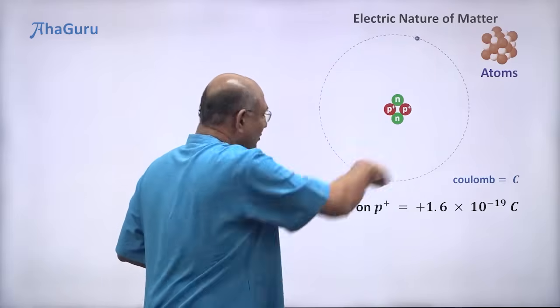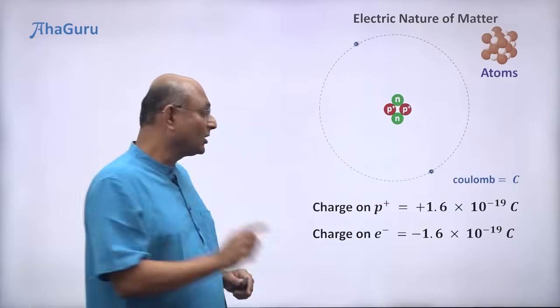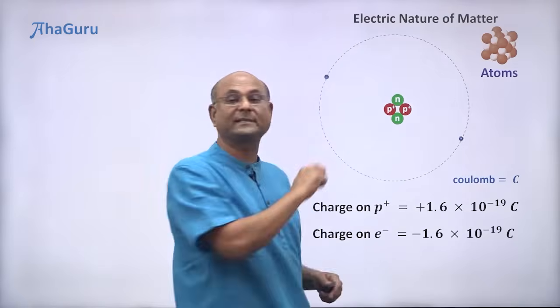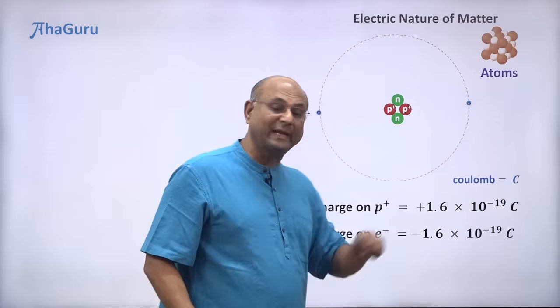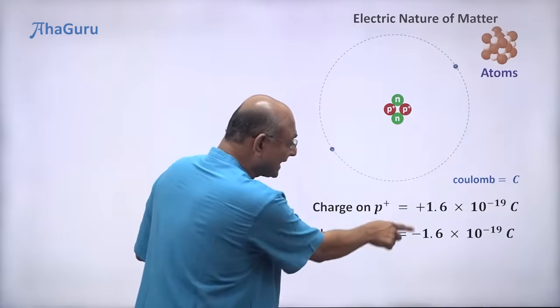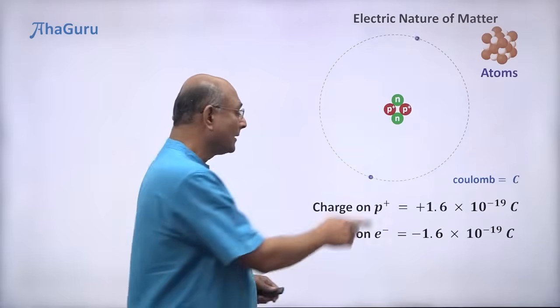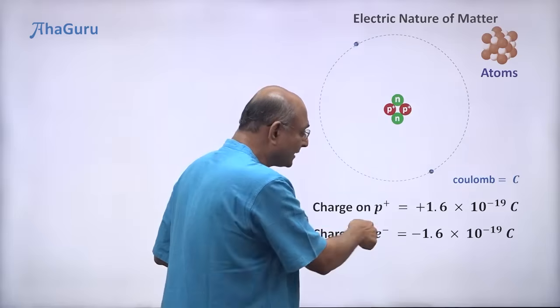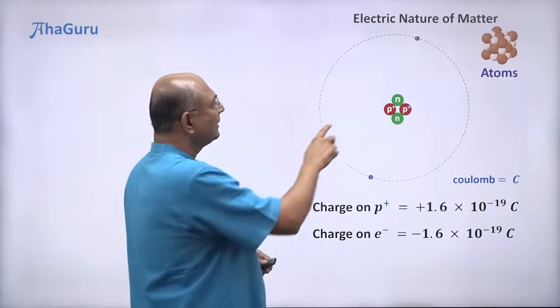And if you look at the electrons, they have a charge of minus 1.6 × 10^-19 coulombs. Exactly the same amount of charge, proton has plus charge, electron has minus charge.